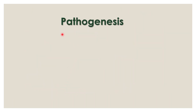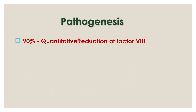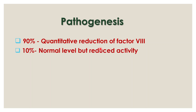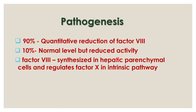Let us look at the pathogenesis of Haemophilia A. In 90% of cases, it is due to a quantitative reduction of Factor VIII, but in 10% of cases it occurs due to a normal level of Factor VIII but with reduced activity. Factor VIII is synthesized in hepatic parenchymal cells and regulates Factor X in the intrinsic pathway.